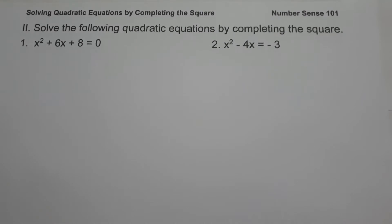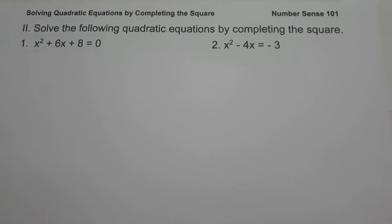On the second set of examples, we are going to solve the following quadratic equations by completing the square. On example number 1, we have x squared plus 6x plus 8 equals 0.